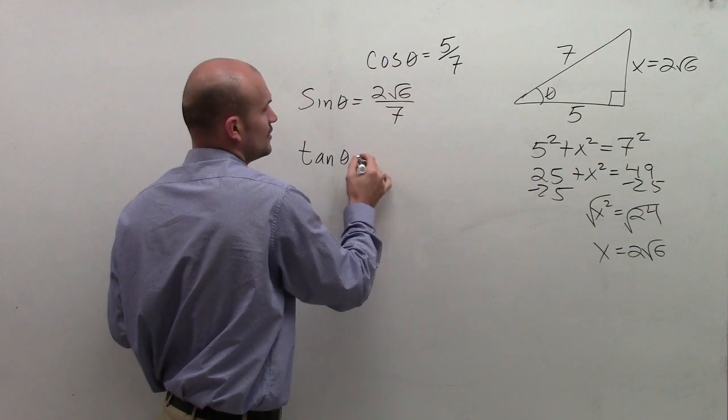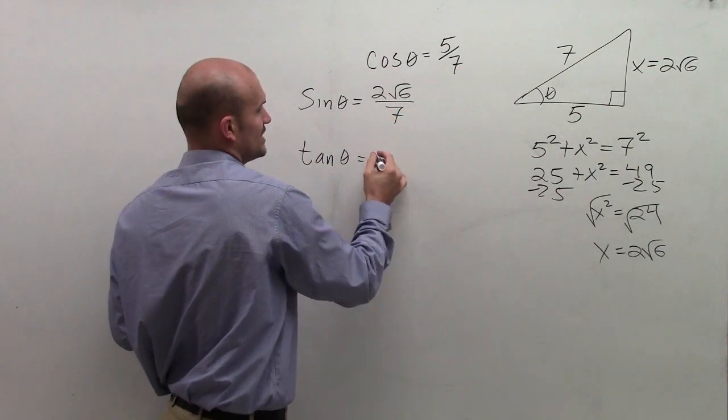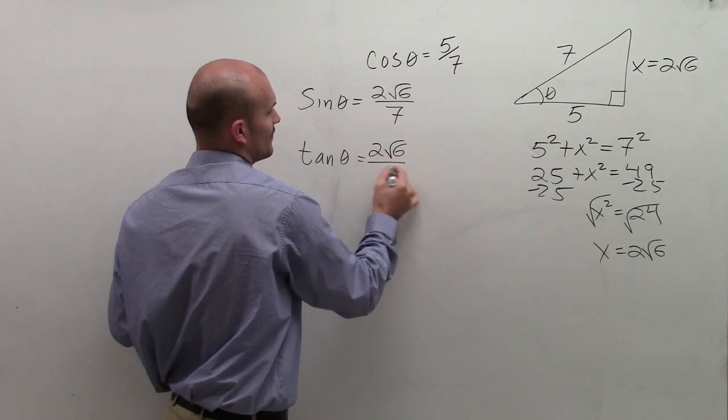Tangent of theta, remember, is opposite over adjacent. So that's going to be 2 radical 6 over 5.